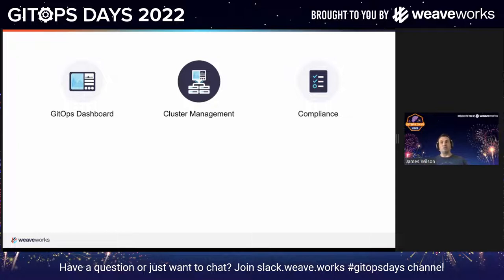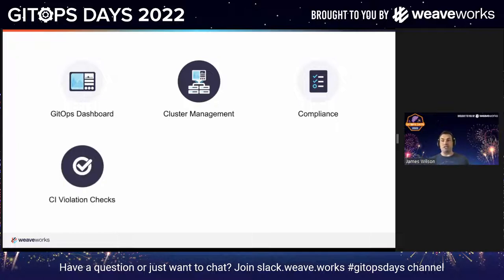There's also the compliance piece. With Weave GitOps, you get a new set of policies — custom resources — that allow you to have governance and compliance on your clusters or even for resources outside of your cluster. We're constantly monitoring to make sure clusters are in compliance and letting you know if not. And there are CI violation checks as well. It's not good enough to check for compliance once it's on the cluster — you want to catch these things before you even merge code. The violation tooling running in controllers can be integrated into your CI pipeline so before a pull request is merged, you get a thumbs up that it's safe to merge.